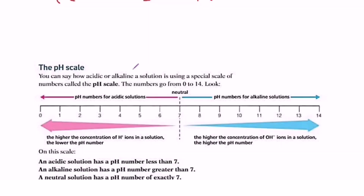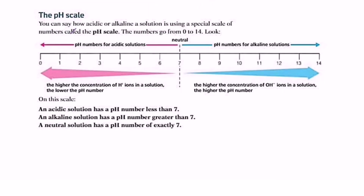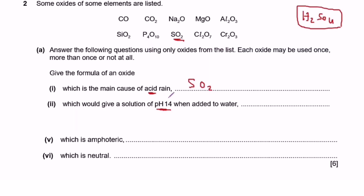Part ii asks which oxide gives a solution of pH 14 when added to water. pH 14 means the solution is alkaline. Looking at the pH scale — it starts at 0 and ends at 14, with 7 being neutral — anything above 7 is alkaline, and 14 means very strongly alkaline. So we need a basic oxide.